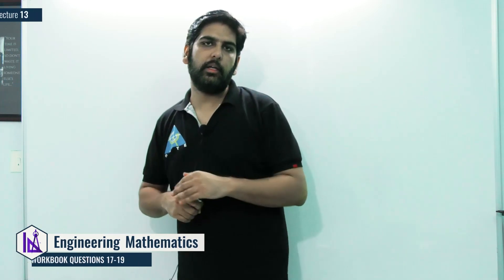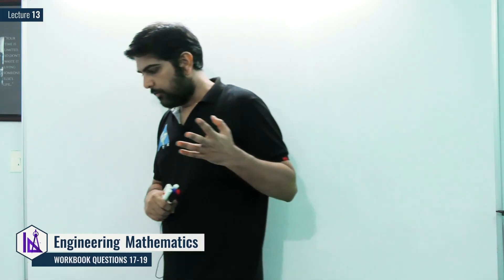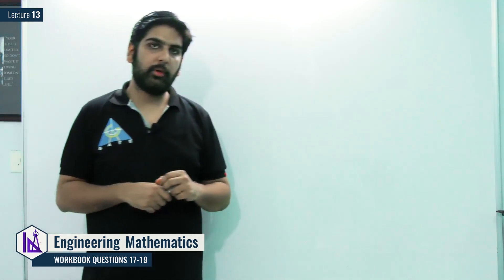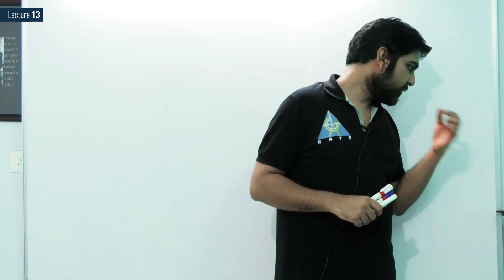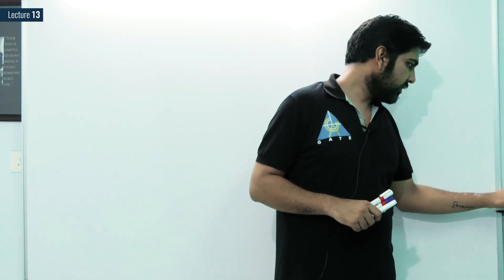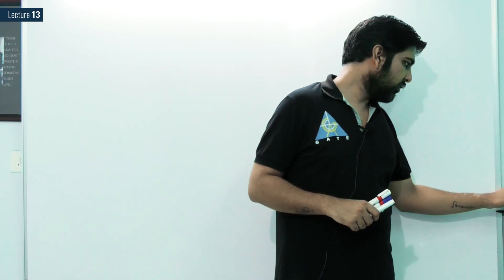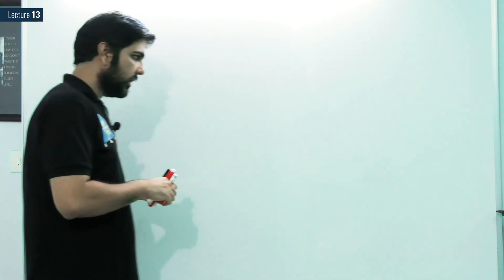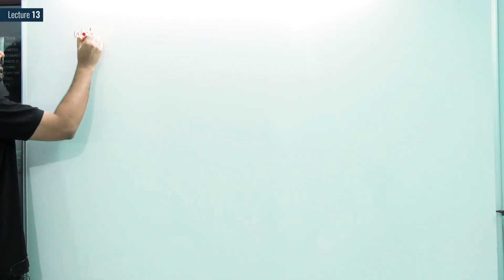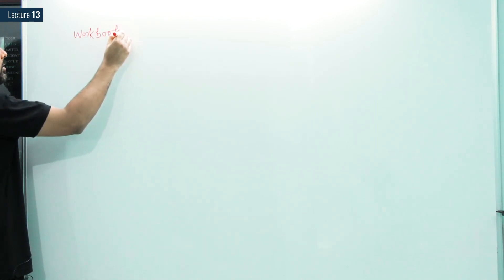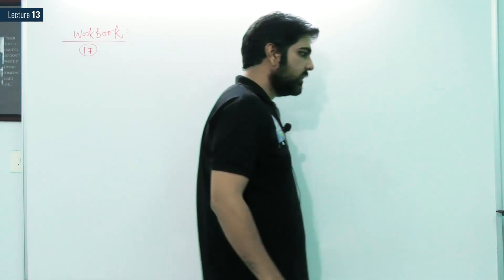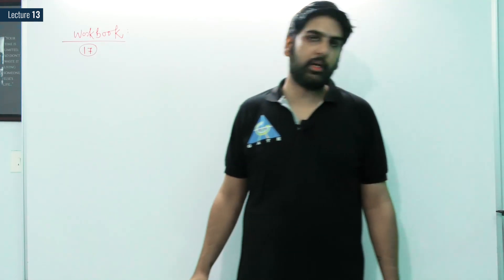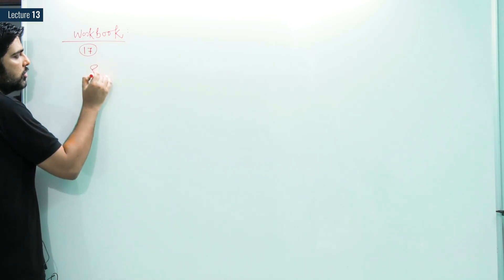Dear students, we have completed vector integral calculus and the theorems — Stokes theorem and Gauss theorem — in the last lecture. Now it is time to start the workbook questions. Starting from question number 17 onwards, question 17 is a theoretical question involving a double integral and cross product, which is nothing but the Stokes theorem.